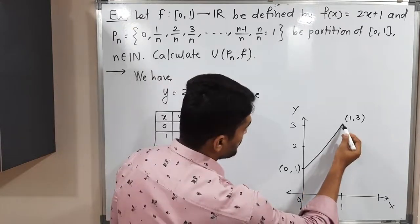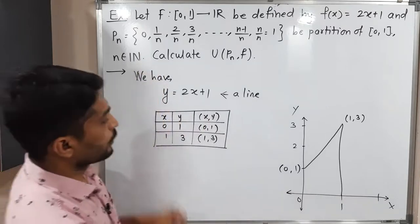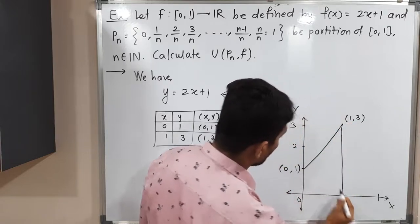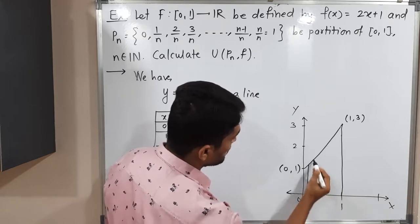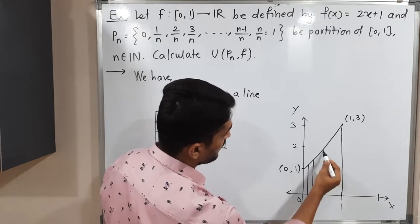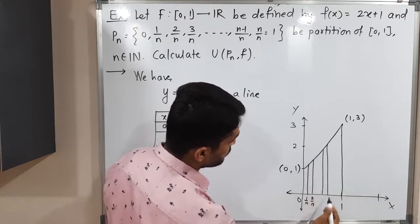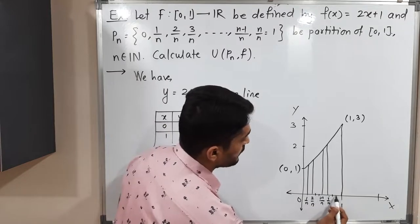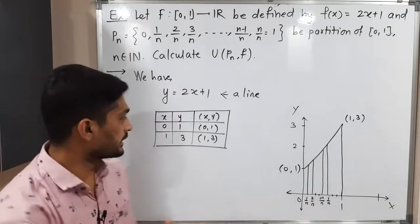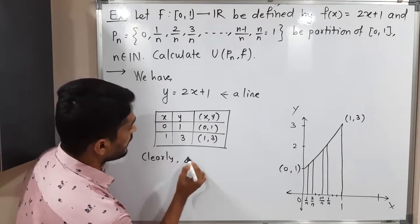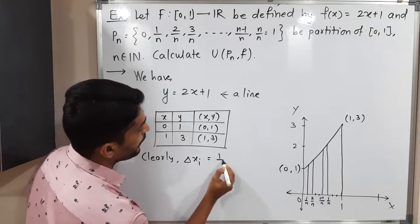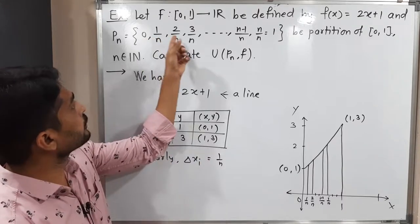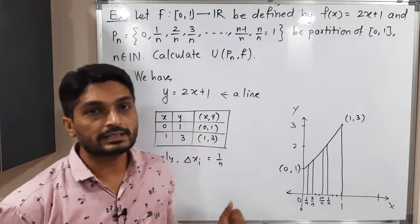The partitions are also given to us: 0, 1/n, 2/n, 3/n, and so on. The ith interval runs from (i−1)/n to i/n. The length of each sub-interval, Δxᵢ, is equal to 1/n, since consecutive partition points differ by 1/n.